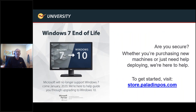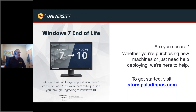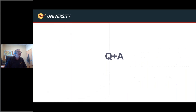Windows 7 end of life — just want to remind everybody: if you've got Windows 7 machines out there, you're not as protected as you can be. We're encouraging everybody to either upgrade to Windows 10 or buy new computers. If you've had computers for longer than four or five or six years, it's probably a good opportunity to start swapping those out with Windows 10 machines. We can help you with that.